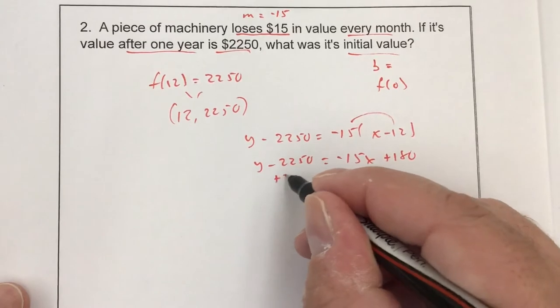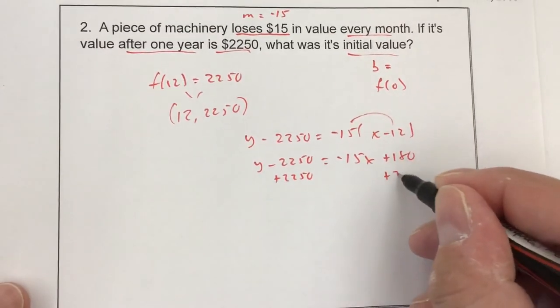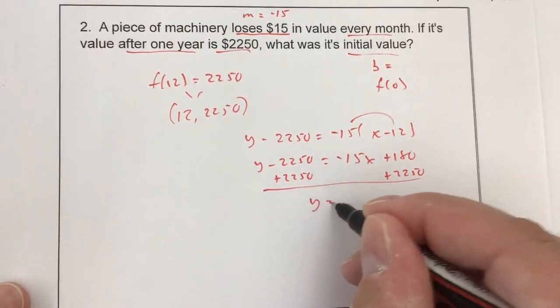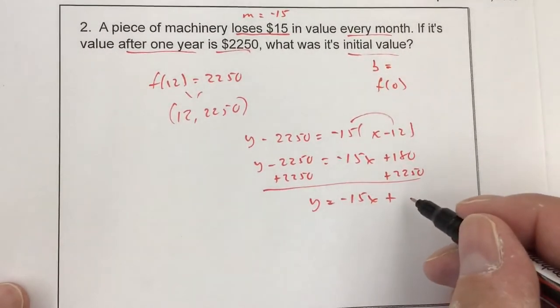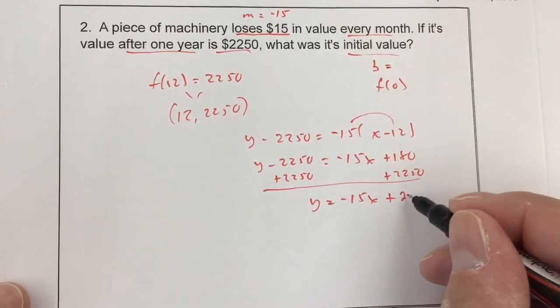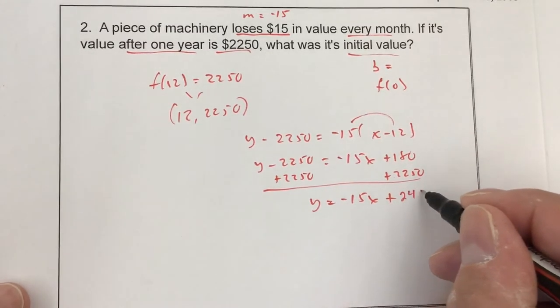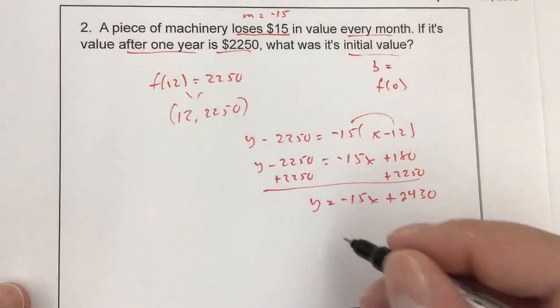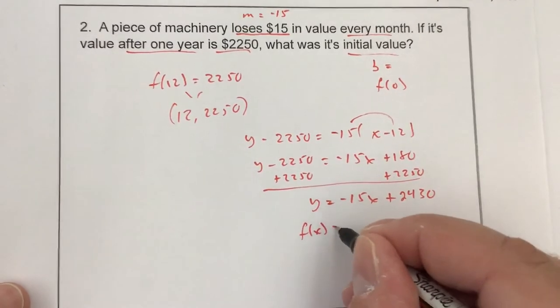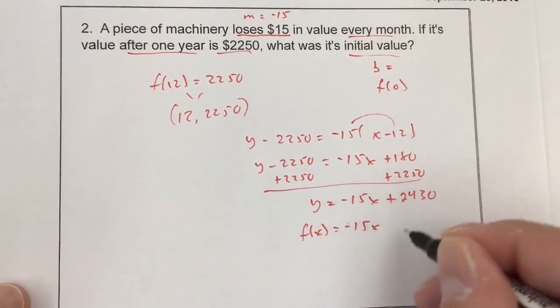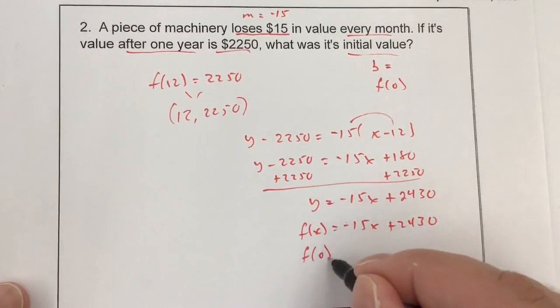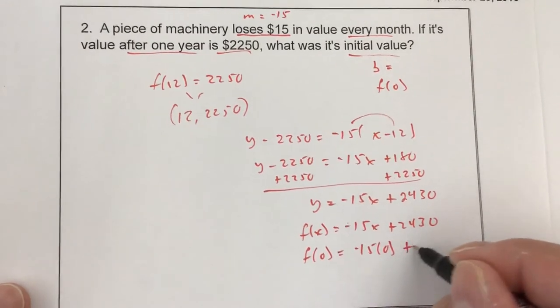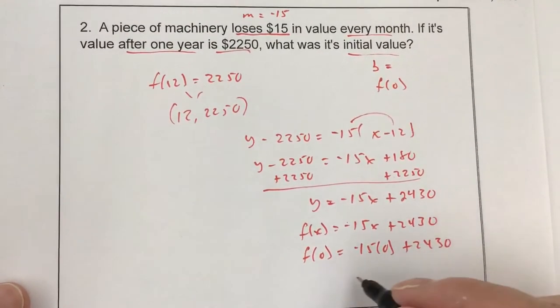y minus $2,250 equals negative 15x. Negative 15 times negative 12 is, I believe, 180. So I add the $2,250. y equals negative 15x plus $2,430. So as a function, that's f(x) equals negative 15x plus $2,430. I want to find f(0), so negative 15 times 0 plus $2,430 is just going to be $2,430.